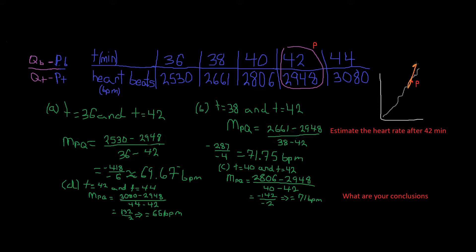That line becomes the tangent line because it converges. We get a line that touches P and goes in the same direction as the curve. We're going to do this first example where t equals 36 and t equals 42, finding the slope of the secant line mpq.